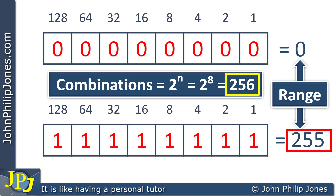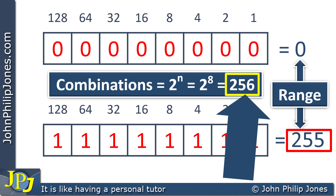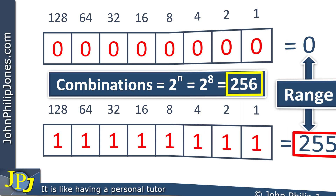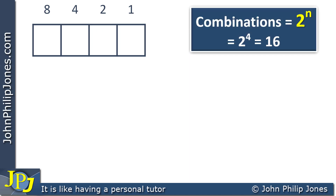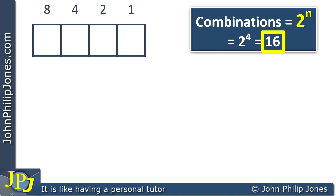It's clear there's a relationship here — the maximum value of the range appears to always be 1 less than the number of combinations, and we need to take that understanding forward. Returning to the nibble, the number of combinations is 2 to the n, which is 2 to the 4, because there are 4 bits, giving us 16. The maximum value will be 1 less than 16, and the first number in the range will always be 0.